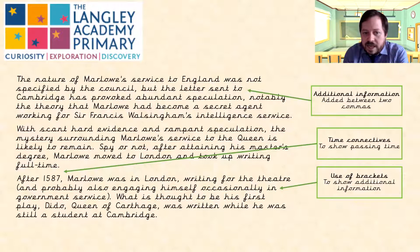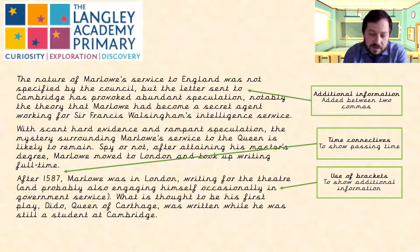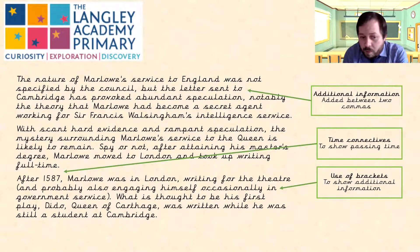'With scant hard evidence and rampant speculation, the mystery surrounding Marlowe's service to the Queen is likely to remain. Spy or not, after attaining his master's degree, Marlowe moved to London and took up writing full time.' That's our time connective. 'After 1587, Marlowe was in London, writing for the theatre and probably also engaging himself in occasional government service.'